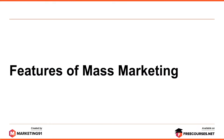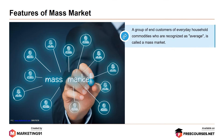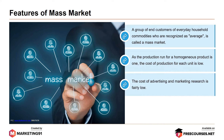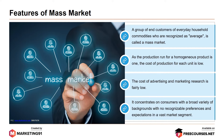Features of mass marketing: A group of end customers of everyday household commodities who are recognized as average is called a mass market. As the production run for a homogeneous product is one, the cost of production for each unit is low. The cost of advertising and marketing research is fairly low. This leads to more possibilities of sales volume and efficiency of scale in a much bigger market. Finally, it concentrates on consumers with a broad variety of backgrounds with no recognizable preferences and expectations in a vast market segment.